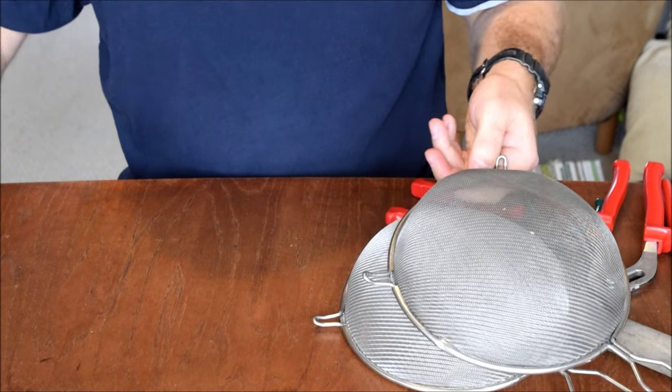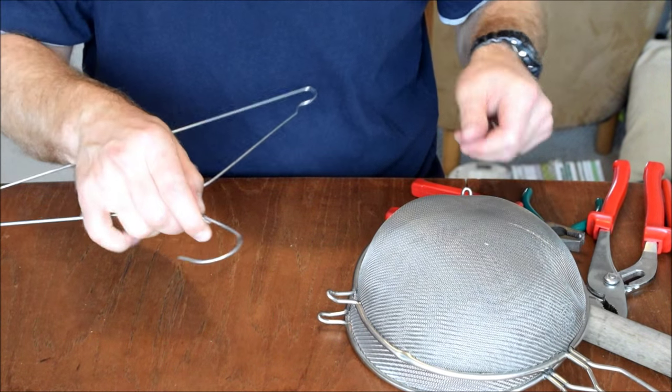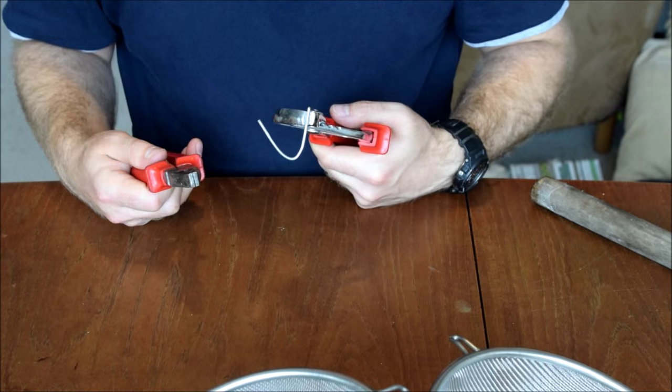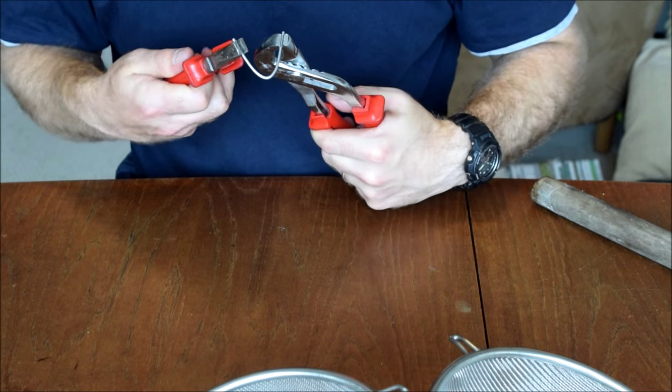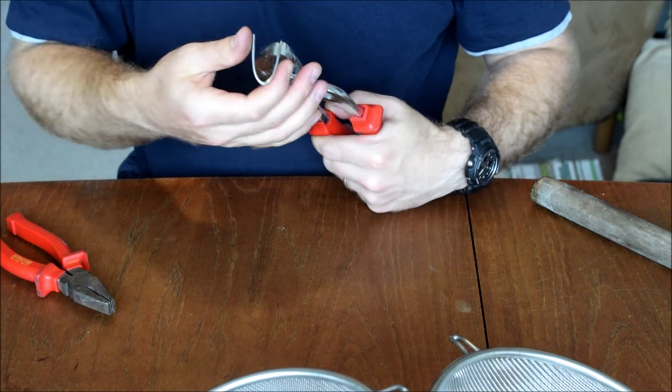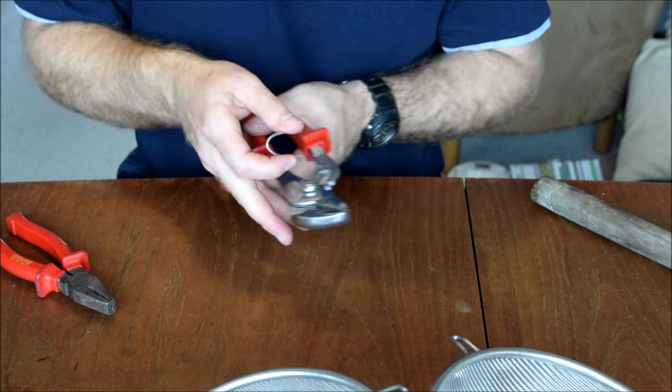Now we're going to take some of the wire from the coat hanger and use that to make a little hinge there. So I've got a short length of wire from the coat hanger. That needs to be bent into a U shape, quite a wide U shape because it's got to fit round the rims of the two sieves.